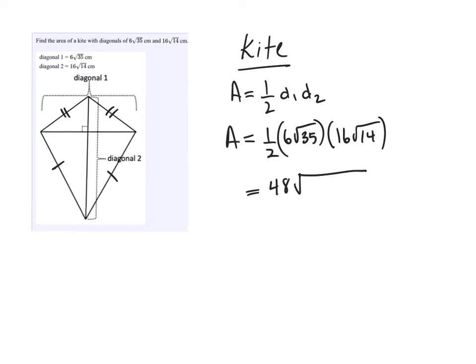Now I'm looking at root 35 and root 14, and I notice that 35 and 14 both have a common factor of 7. In fact, 35 is 7 times 5, and 14 is 7 times 2. The reason I did that is because the two 7s are going to make a perfect square of 49.